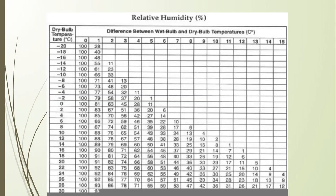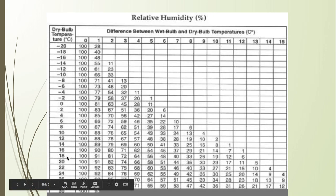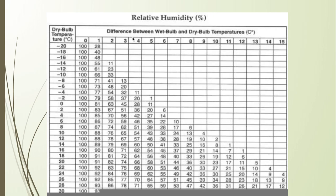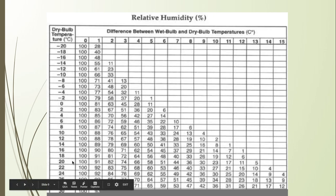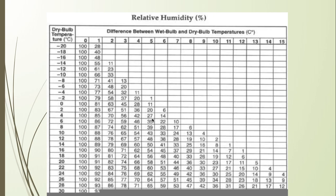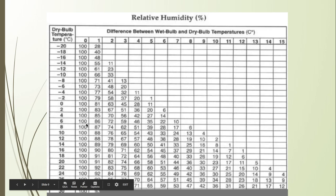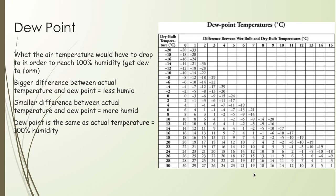Here is the table we use to calculate relative humidity — you don't need to memorize it, I would give it to you. The most important thing is that you look at the dry bulb temperature first. Then you find the difference by subtracting the wet bulb from the dry bulb. For example, if the dry bulb is 20°C and the wet bulb is 15°C, the difference is 5. Find 20 on the table, go down 5, and the humidity is 58%. If there's no difference, it's always 100% humidity. The bigger the difference, the lower the humidity.